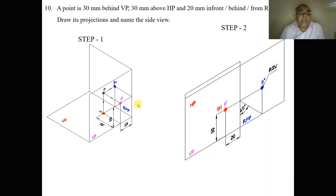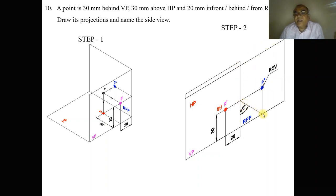When looking from the right side view you can see above HP and behind VP. When RPP is rotated, above HP is still vertical so a line is drawn to the profile view to get the above-HP distance. Behind VP when projected to the plane gives 30 mm, and behind RPP gives 20 mm. Since the right side view becomes horizontal when rotated, draw a 45-degree line so the vertical distance of 30 mm is transferred into a horizontal distance. Where the projected line from the front view meets this, you get p-double-dash — the right side view.